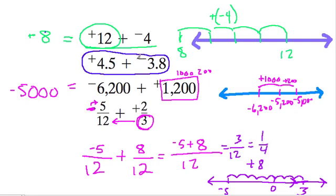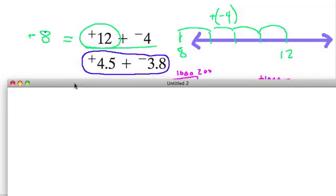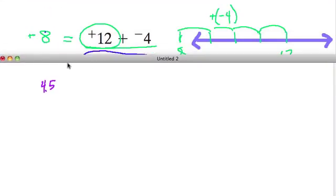Now, I think a simple way of dealing with the decimals is to observe kind of a pattern of what's been happening in all these problems. So let me make a new page here. So the decimal problem that we're dealing with is 4.5, plus negative 3.8.